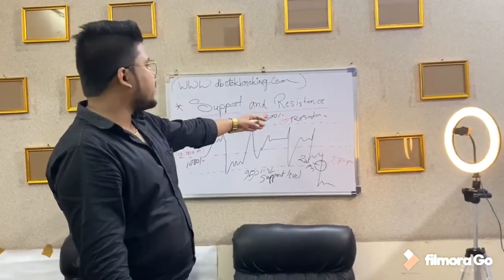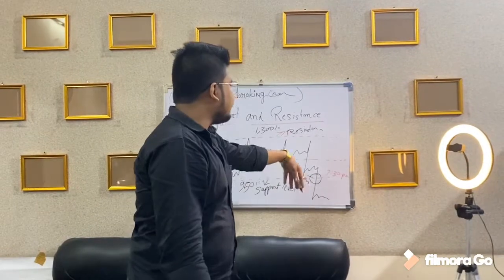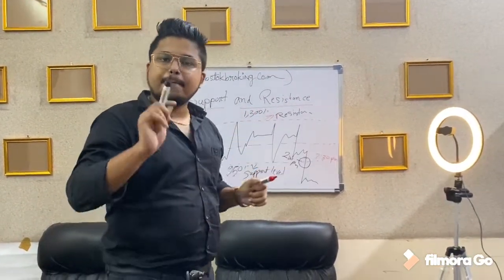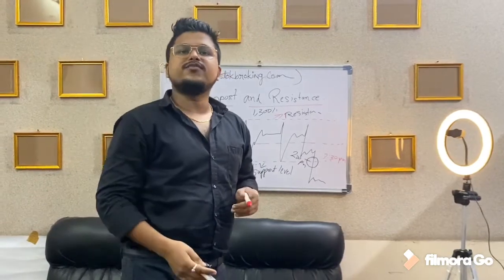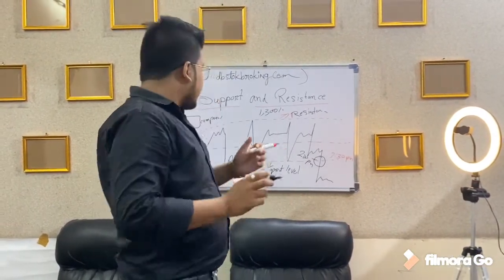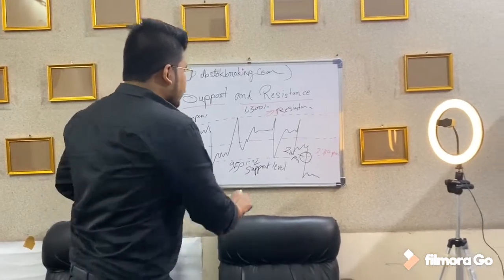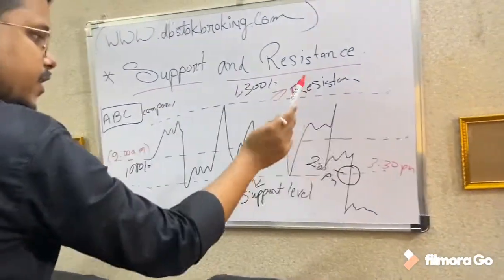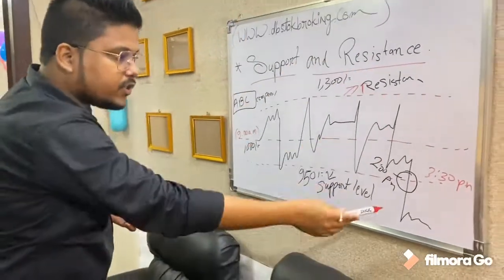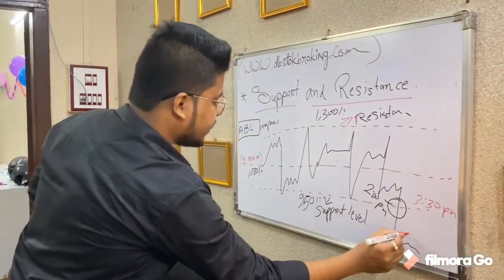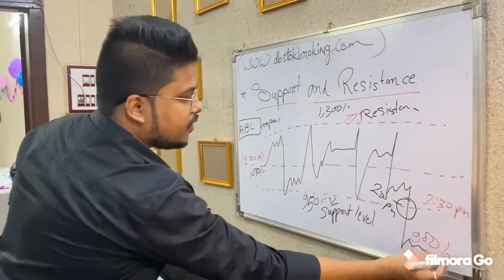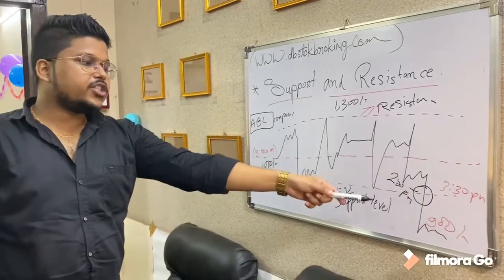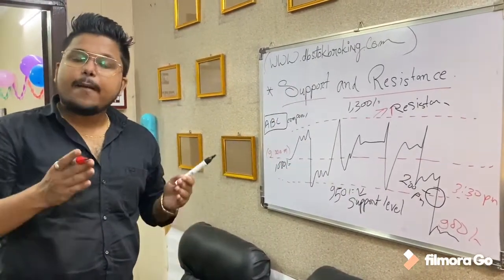Same vice versa, you can use this for resistance. If the scenario goes opposite — if the stock breaks 1,300 — the company will go up to around 1,400 or 1,500 on that particular day. Now when it breaks the support level at 2 p.m., the company goes down. You can say to Rs. 900. That means the support level has broken down and the company has gone down and touched the 900 level.